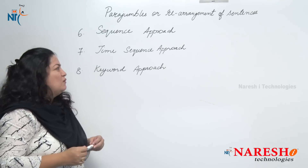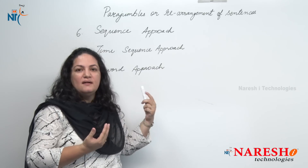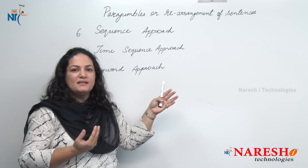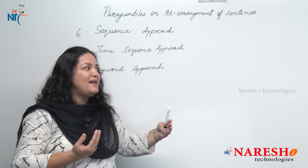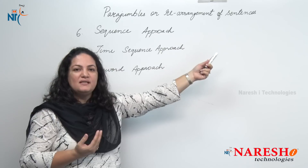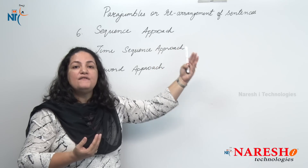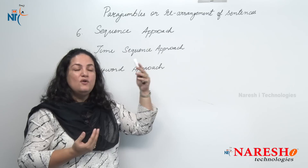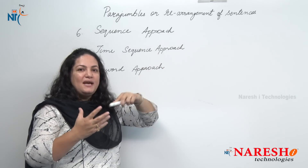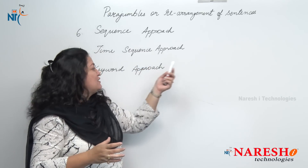The next is the time sequence approach. You may have words like later, after, then, or specific years like 1945 in your sentences. Whenever these time-related numbers or words appear, the information that follows would come in the latter part of the sentences. For example, if you talk about a freedom struggle that happened in a particular year, subsequent events will follow that year — not before it. You cannot give all the information and then say 'this happened in this year.' You start with the year, then describe what happened.